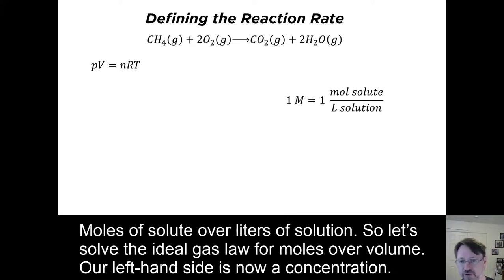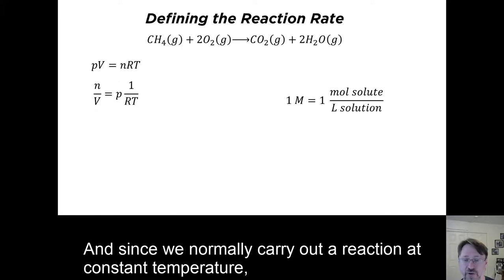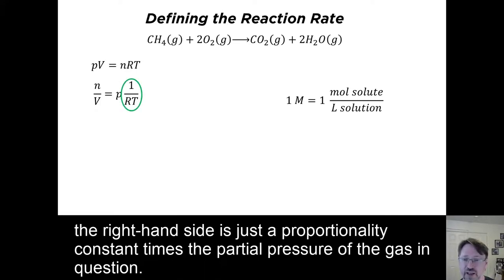Moles of solute over liters of solution. So let's solve the ideal gas law for moles over volume. Our left hand side is now a concentration. And since we normally carry out a reaction at constant temperature, the right hand side is just a proportionality constant times the partial pressure of the gas in question.